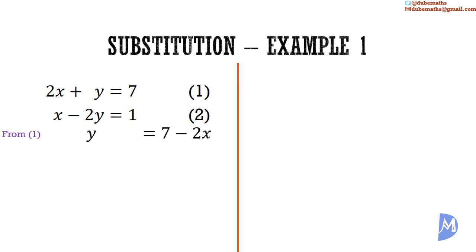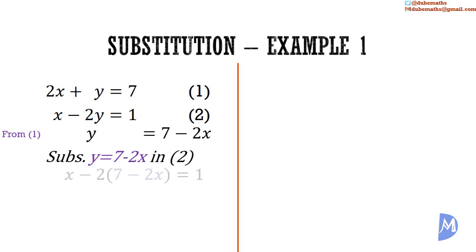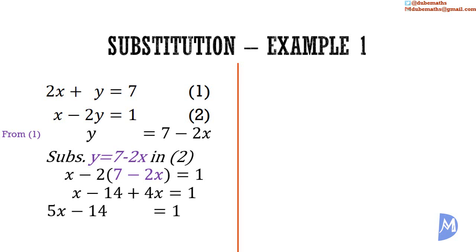Now we substitute y equals 7 minus 2x into the second equation, to get x minus 2 multiplied by (7 minus 2x) is equal to 1. Now we have a simple equation in only one unknown, x. Expanding the brackets to simplify, we get x minus 14 plus 4x is equal to 1. x plus 4x is equal to 5x.